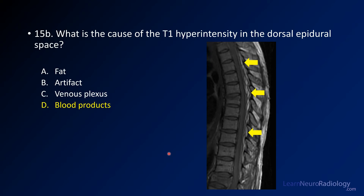That T1 hyperintensity in the epidural space is due to blood products, which are T1 hyperintense. There's not a lot that can be T1 hyperintense — you can get artifacts and CSF flow, and venous plexus, although that tends to be more common on the ventral side. But here, the dreaded thing you have to worry about is blood products.